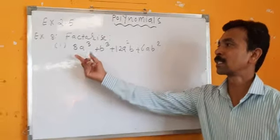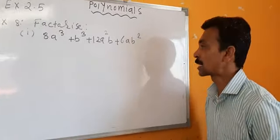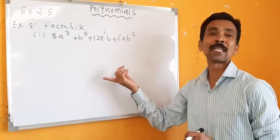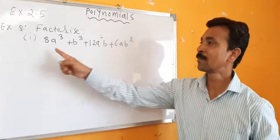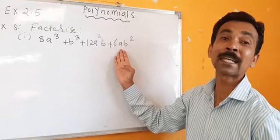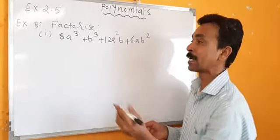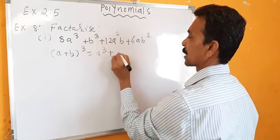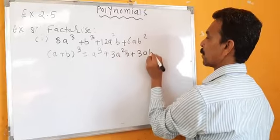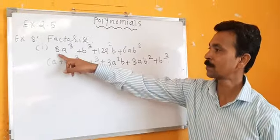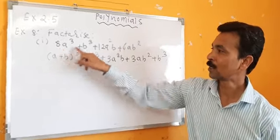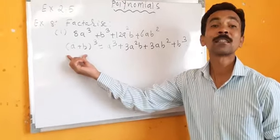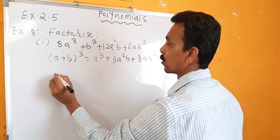Example number 8 — factorize. The first sum is 8a cube plus b cube plus 12a squared b plus 6ab squared. If you look at this sum, the part of the expression we have to convert into an identity. It looks like the right-hand side of the identity A plus B whole cube.